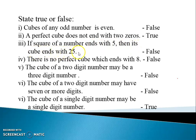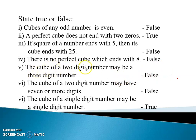Next: if a square of a number ends with 5, then its cube root ends with 25 — it is false. There is no perfect cube which ends with 8 — it is also false, it does exist. The cube of a two-digit number may be a three-digit number — it is false. The cube of a two-digit number may have seven or more digits — it is also false; it does not have seven or more digits.